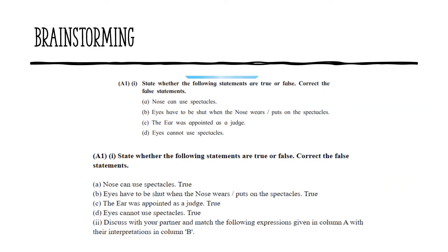Let's do some brainstorming. State whether the following statements are true or false. The nose can use spectacles — True. Eyes have to be shut when the nose wears spectacles — True. The ear was appointed as the judge — True; Ear Baron was appointed as the judge. Eyes cannot use spectacles — True; they have to be shut.